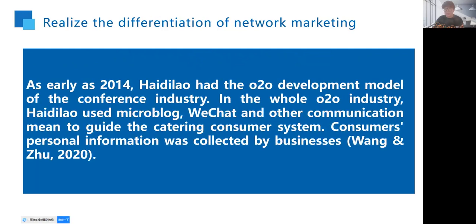Haidilao realizes the differentiation of network marketing to meet the increasingly personalized spiritual needs of the audience. In the era of traditional marketing, in order to solve customers' long waiting time troubles, Haidilao would provide customers with manicure, shoe shining, and other services before meals. At present, with the rapid development of the internet, the personalized service of Haidilao is more advanced. As early as 2014, Haidilao had developed an O2O model for the catering industry, using Weibo, WeChat, and other communication channels to guide the catering customer system. Consumers' personal information was collected by the business — for example, what dishes customers ordered would be displayed on a tablet, and previous order history could be used as a reference for the current visit.